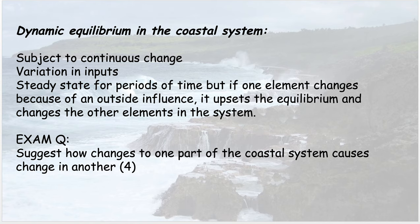We've talked about dynamic equilibrium at the coastal system. Pause the video and look at this exam question: 'Suggest how changes to one part of the coastal system cause change in another.' This is a four-mark question. If you're not sure how to answer, go back to the model of the coast with inputs, processes, and outputs. Think of a couple of examples of how changes to one part cause a change in another, then pause the video for four to five minutes maximum and write down a quick answer.